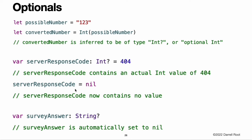Nil. You set an optional variable to a valueless state by assigning it the special value nil. You cannot use nil with non-optional constants and variables. If a constant or variable in your code needs to work with the absence of a value under certain conditions, always declare it as an optional value of the appropriate type. If you define an optional variable without providing a default value, the variable is automatically set to nil for you. Swift's nil is not the same as nil in Objective-C. In Objective-C, nil is a pointer to a non-existent object. In Swift, nil is not a pointer — it is the absence of a value of a certain type. Optionals of any type can be set to nil, not just object types.